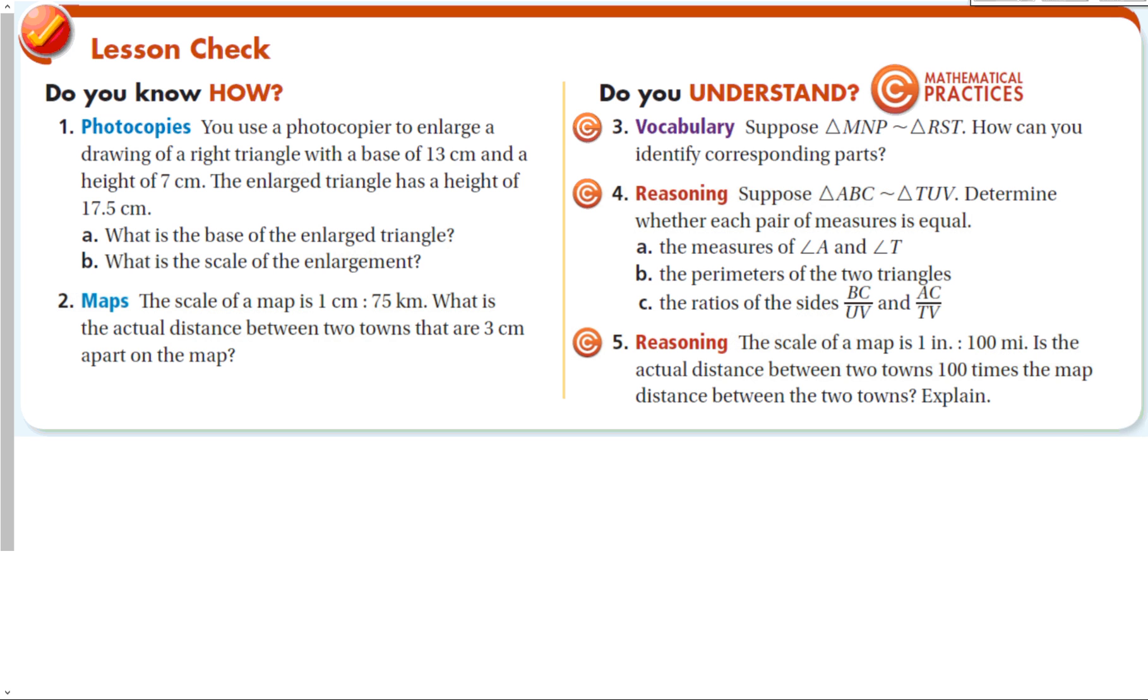Let's make sure we understand everything in this lesson. We can use a photocopier to enlarge a drawing of a right triangle with a base of 13 and a height of 7. The enlarged triangle has a height of 17.5. If we draw this out, here's my first right triangle with a base of 13 and a height of 7. My second right triangle, which is going to be a little bigger, has a height of 17.5. Now I can set up my proportion: 7 over 17.5 equals 13 over X. And then I can figure out the scale of this enlargement by setting this ratio equal to 1 over something. The scale of a map is 1 centimeter to 75 kilometers. What is the actual distance between two towns? We can set that up by saying 1 over 75 equals 3 over X, and solve that.